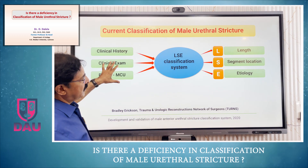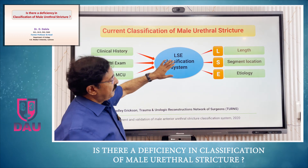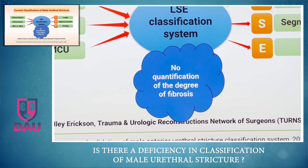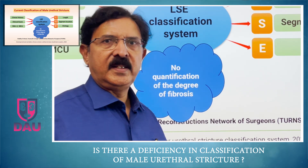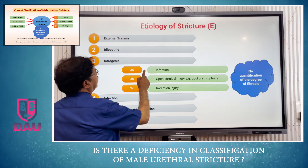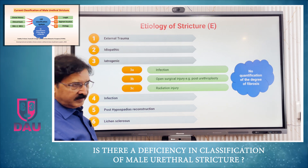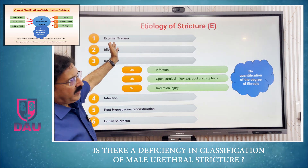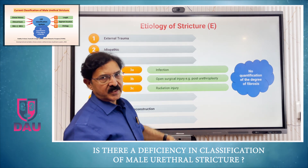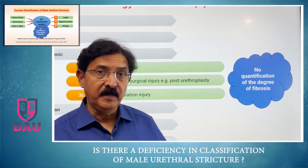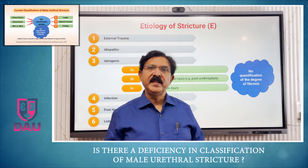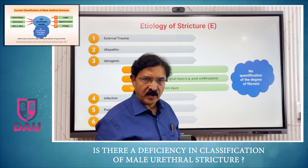When you see this LSE classification system, which talks about length, segment location and etiology, what is missing is that there is no mention about the quantification of the degree of fibrosis in the stricture. There is a detailed talk about etiology — what resulted in a stricture — but how dense, how thick, how firm is the stricture, the quantification of collagenosis is not there, which is of paramount importance for all reconstructive surgeons.